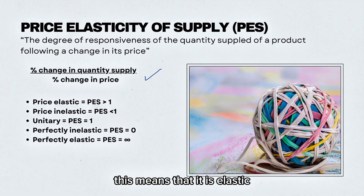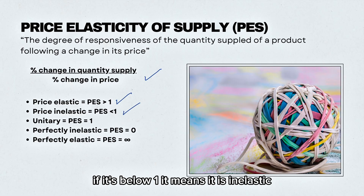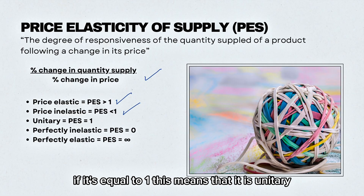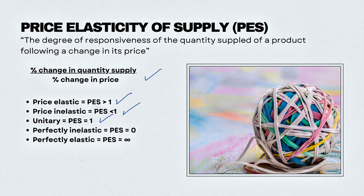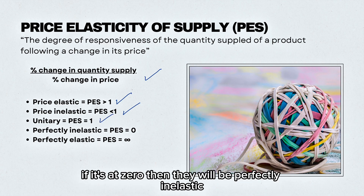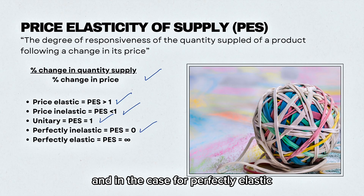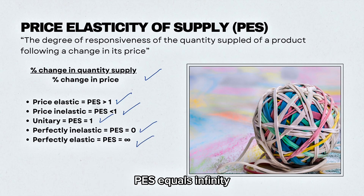When PES is above 1, this means that it is elastic. If it's below 1, it means it is inelastic. If it's equal to 1, this means that it is unitary. If it's at 0, then it will be perfectly inelastic. And in the case of perfectly elastic, PES equals infinity.